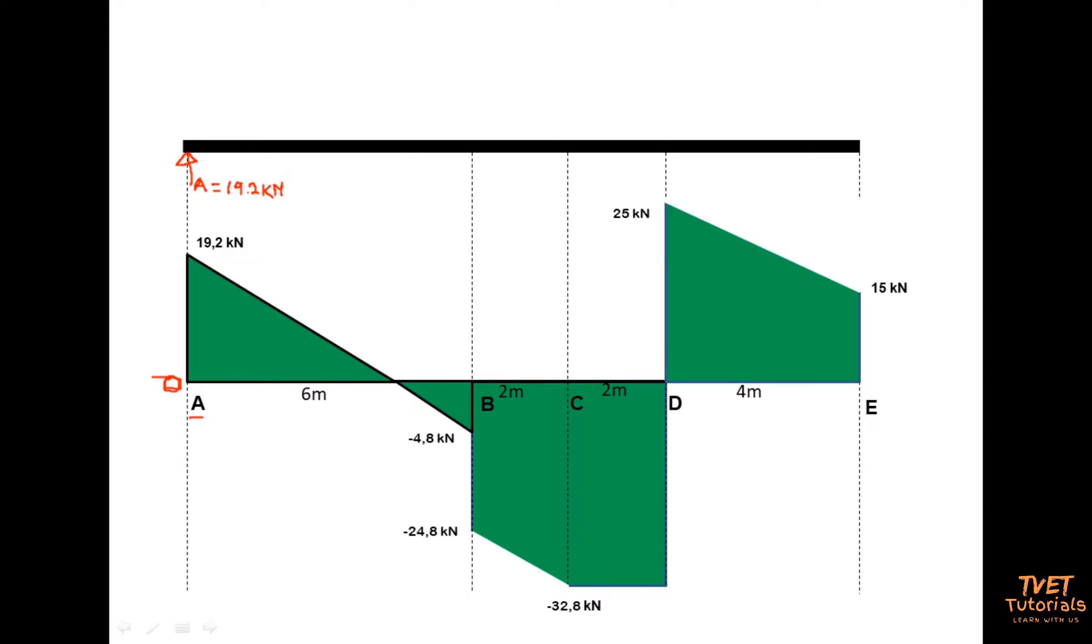So that is why we moved up. Then we say between A and B we move from 19.2 kilonewtons to minus 4.8 kilonewtons. So since we moved down using a slope line, we know that between A and B this indicates that there is a UTL. So we go ahead and draw between A and B a UTL because we went down with a slope line.